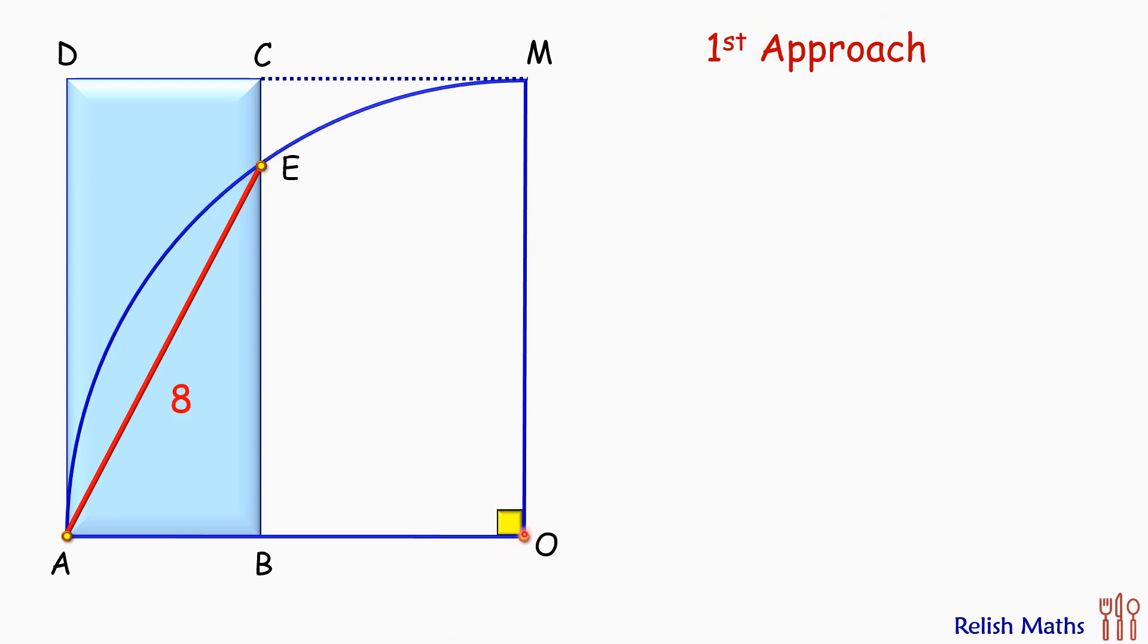From center O, let's draw a perpendicular on chord AE. The perpendicular from the center bisects the chord. Thus AF and FE are equal.